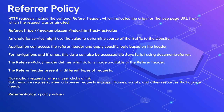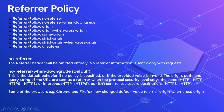The Referrer-Policy can be specified with the Referrer-Policy header, like: Referrer-Policy then the policy value. This supports multiple policy values. The supported values are: no-referrer, no-referrer-when-downgrade, origin, origin-when-cross-origin, same-origin, strict-origin, strict-origin-when-cross-origin, and unsafe-url.